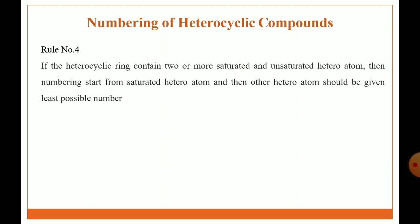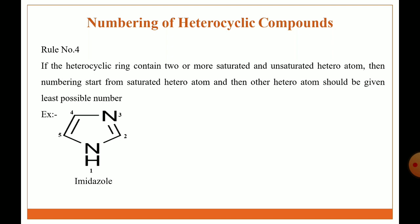Rule 4: if the heterocyclic ring contains two or more saturated and unsaturated heteroatoms, then numbering starts from the saturated heteroatom and the other heteroatoms should be given the least possible number. This is a five-member heterocyclic ring containing saturated and unsaturated heteroatoms — name is imidazole. The first number is given to the saturated heteroatom and the least possible number is given to the next heteroatom. Second example is a five-member heterocyclic ring — name is pyrazole — where the first number is given to the saturated heteroatom and the next number to the unsaturated heteroatom.